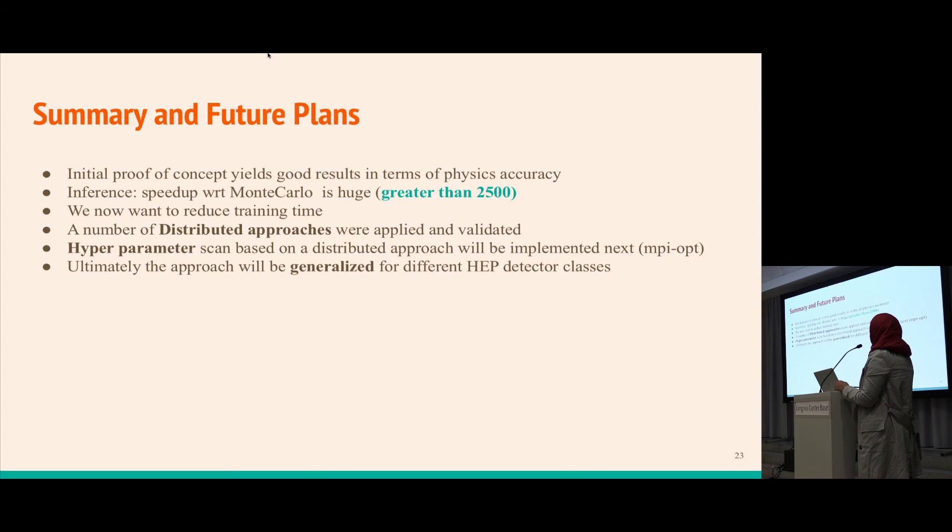In summary, our initial aim was first to achieve physics accuracy to an acceptable level. The second goal was inference speedup with respect to full Monte Carlo greater than 2500. The next goal is to reduce training time. Different distributed approaches were applied and validated. A hyperparameter scan based on distributed approach is next to be implemented using MPI-Opt. Ultimately we'll try to generalize the approach for different kinds of HEP detectors belonging to a certain class.